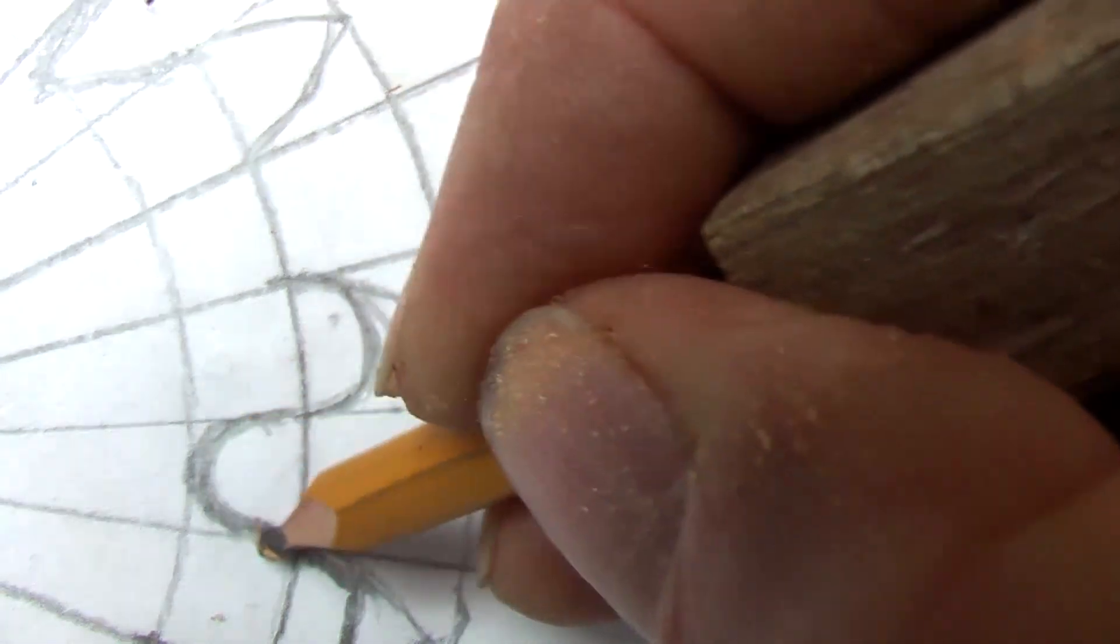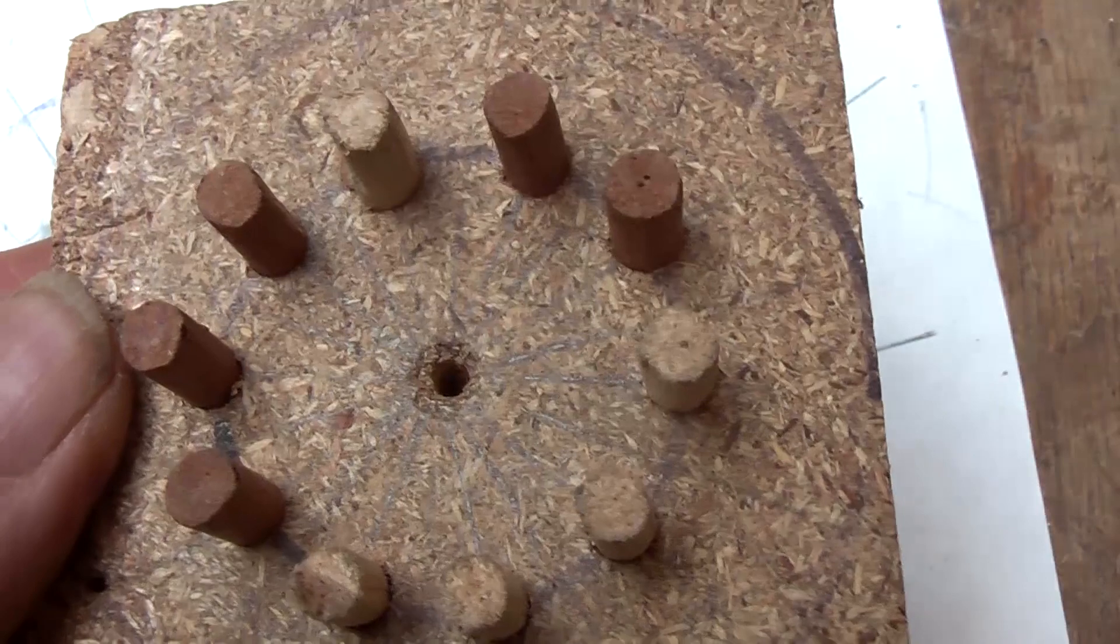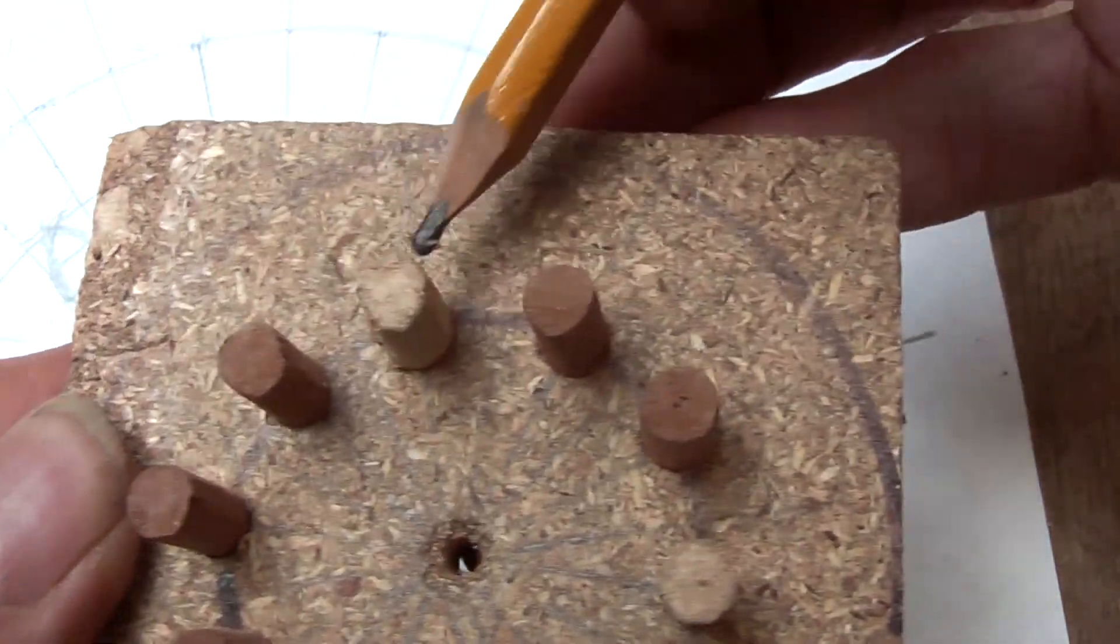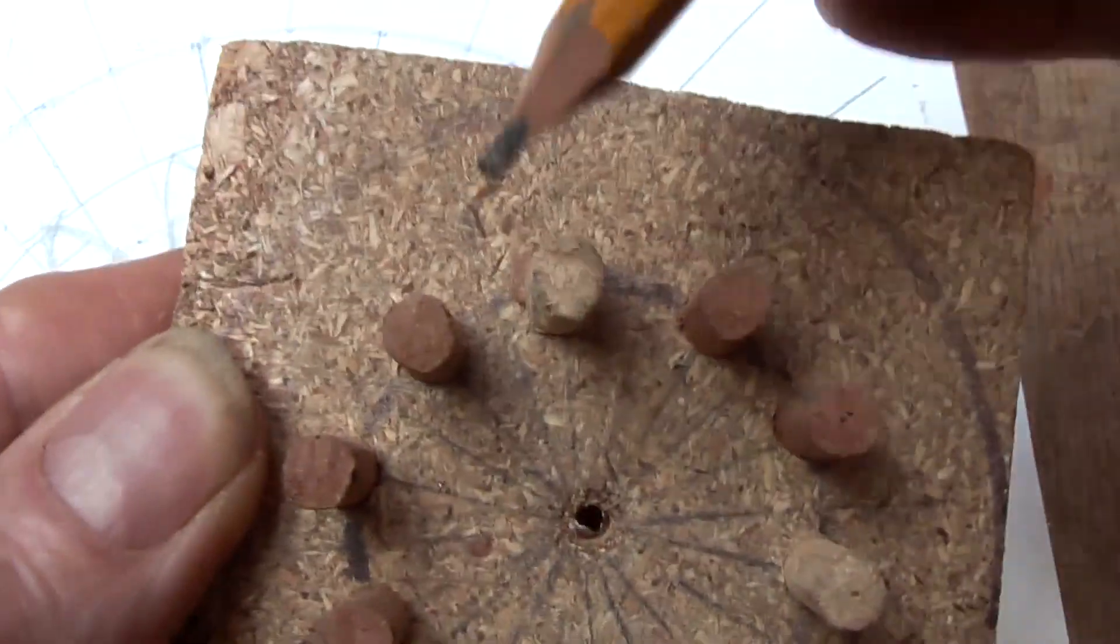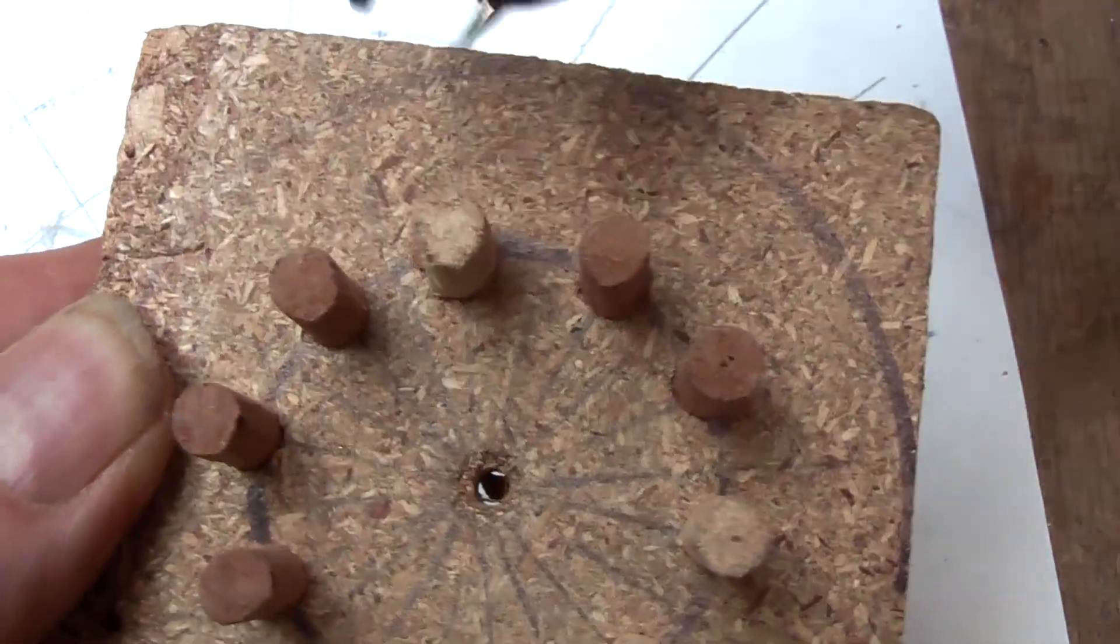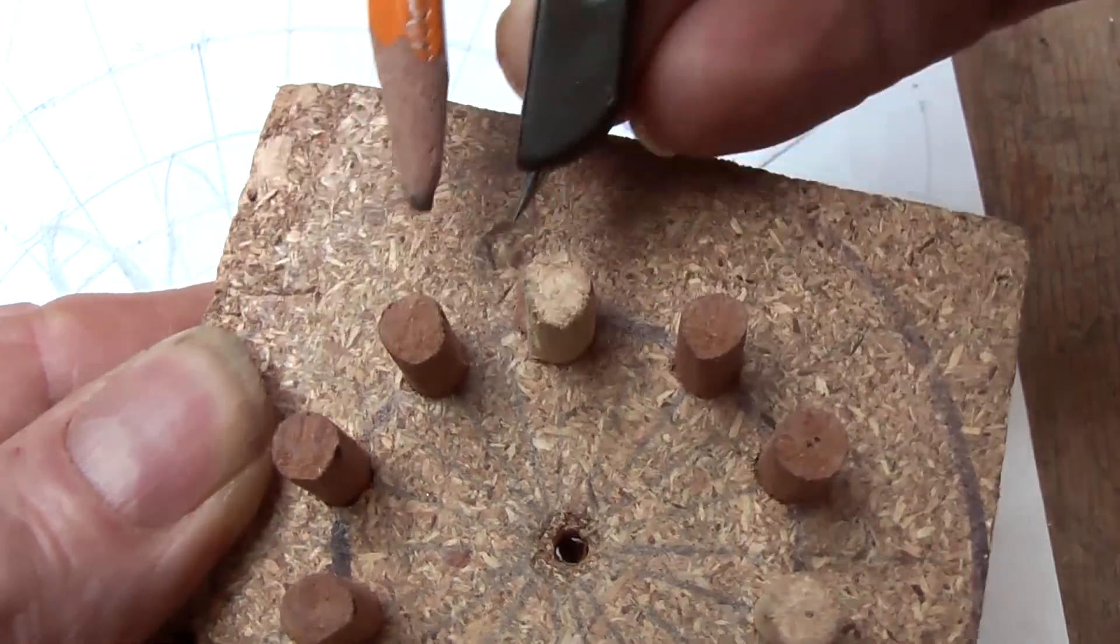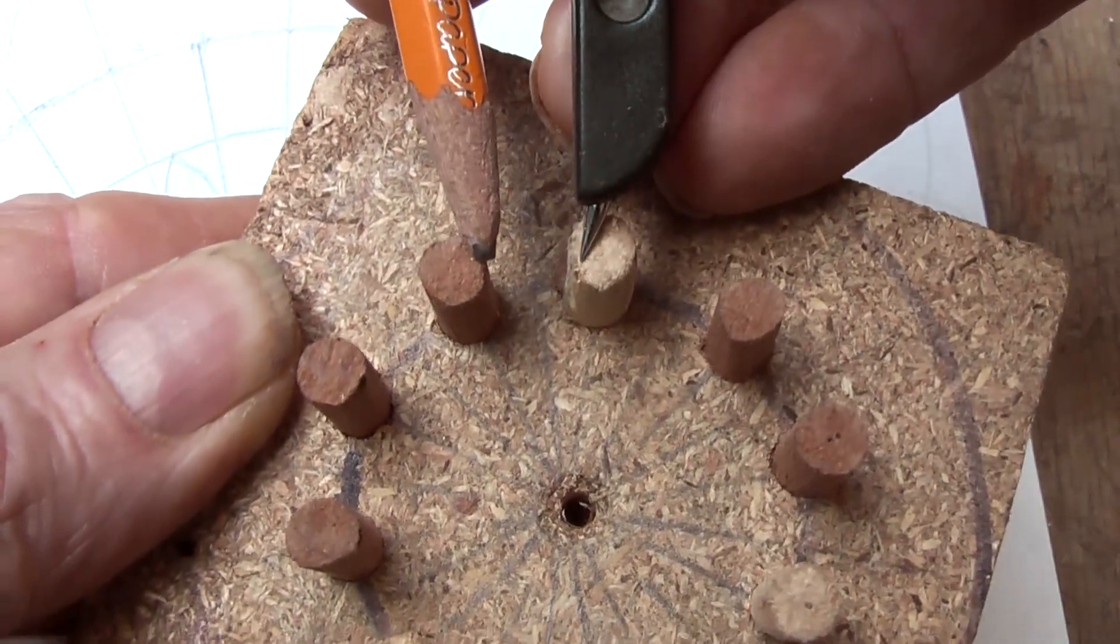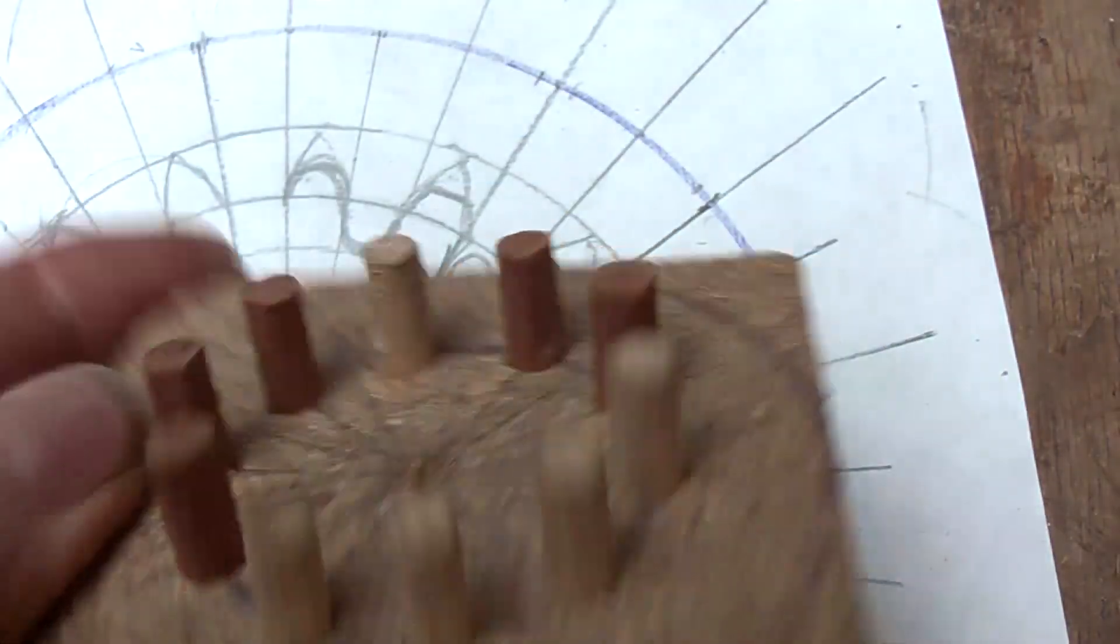With a peg gear we have basically found our pitch circle diameter, which is there, and then right on it we have divided it so that the peg width is exactly the same as the gap width. And that is there.